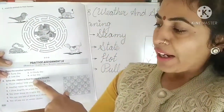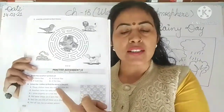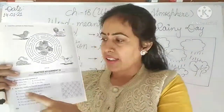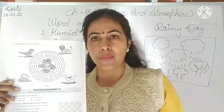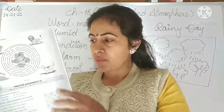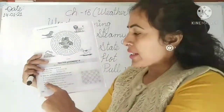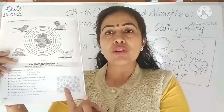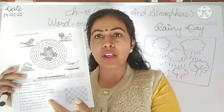Next, we have to solve the word grid — find the word in the grid. There are sentences given and you have to find the answers in the word grid. First sentence: 'These clothes keep you cool on a hot day' — the answer is cotton clothes, so find the word 'cotton' in the grid. Second: 'Another name of rainy season' — the answer is monsoon, so find 'monsoon' in the grid. First read the sentence, find the answer, then locate it in the word grid.